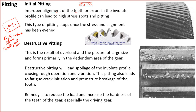Errors in the involute profile can also lead to high stress and sliding. High stress spots will be created, leading to pitting. This type of initial pitting stops once the stress and alignment has evened out — pitting will gradually even out the high contact stress parts and then stop. For example, in a well-aligned gear, the contact pattern is very uniform, whereas in a misaligned gear, contact is very high on one side and lower on the other.